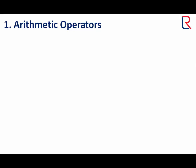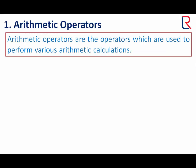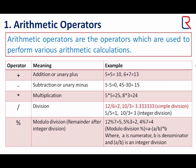So let's see the arithmetic operators. Arithmetic operators are the operators which are used to perform various arithmetic calculations. The operators are: plus is used for addition or unary plus, minus is used for subtraction or unary minus, and the asterisk sign is used for multiplication, and the slash sign is used for division.